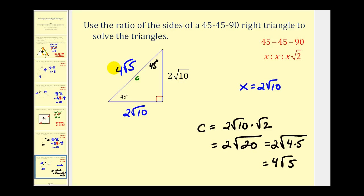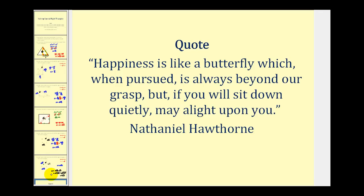So knowing the ratios for the 30-60-90 and the 45-45-90 right triangles can be helpful when you're trying to solve these types of special right triangles. I hope you found this helpful. Thank you for watching.